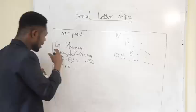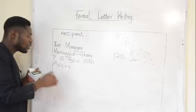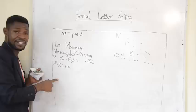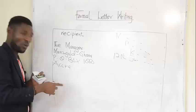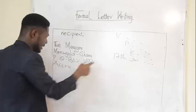So the manager, the company name, P.O. Box, Accra — that is the recipient's address. You don't bring the date here because the date has already been stated in the personal address section. If you add the date here as well, you are repeating yourself. You don't need to bring the date back here.